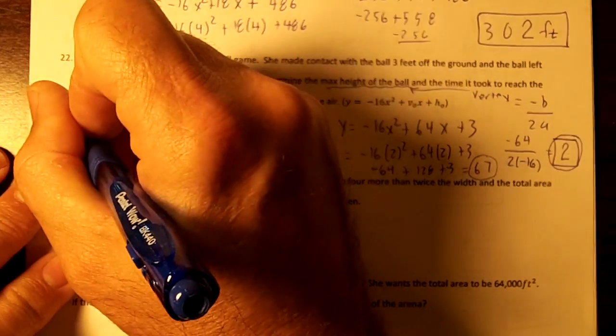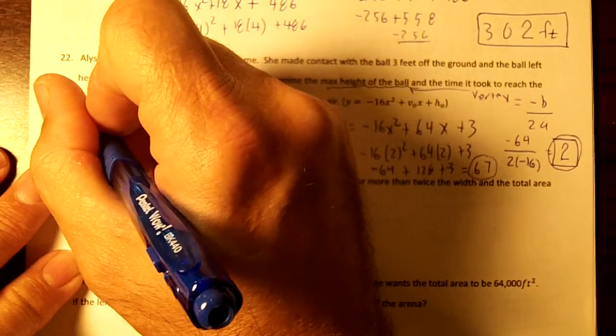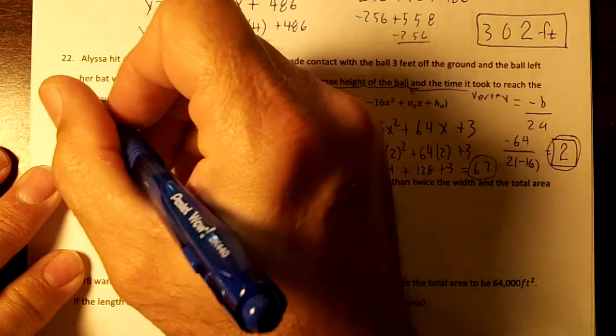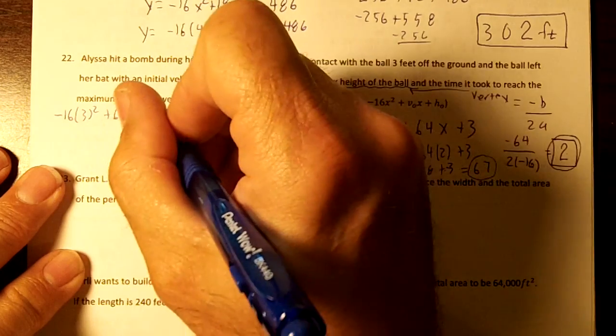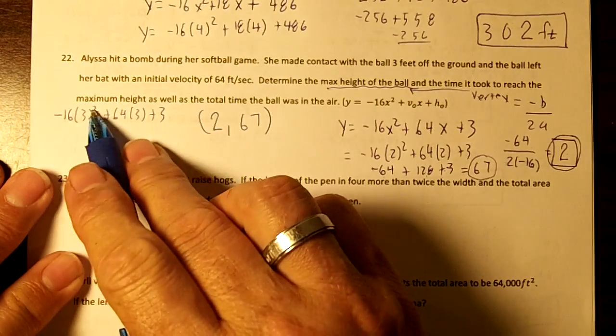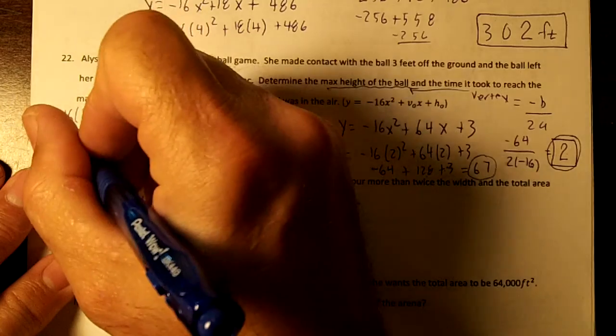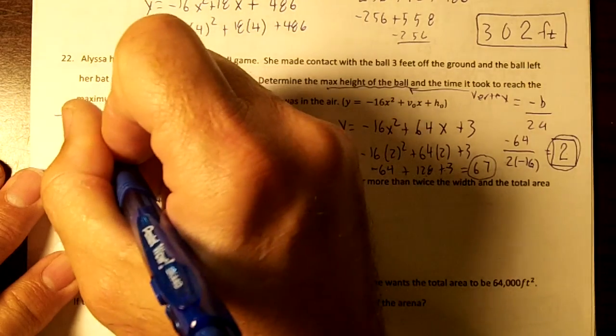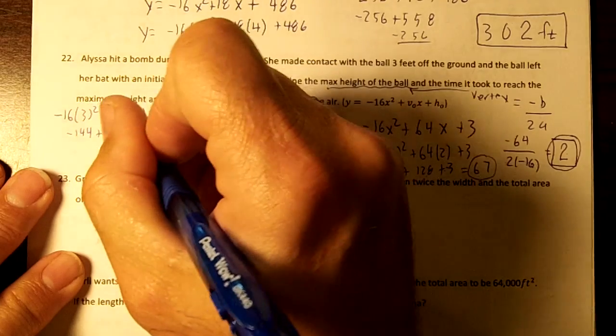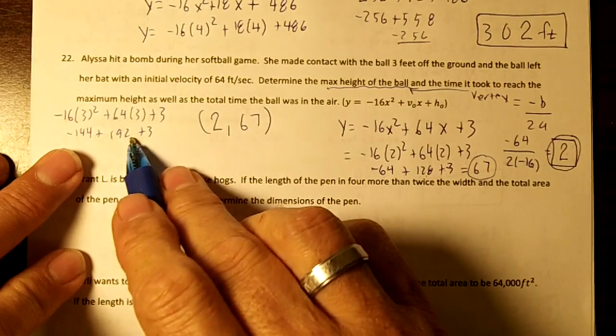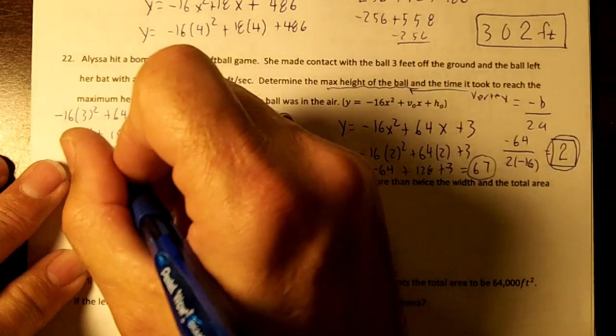So if we do negative 16 times 3 squared plus 64 times 3 plus 3. That's 9 times 16 is negative 144 plus 3 times 64 is 192 plus 3. 195 minus 144 is going to be 51 feet.